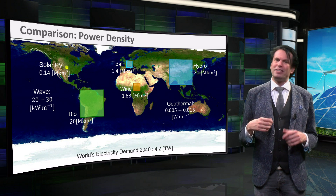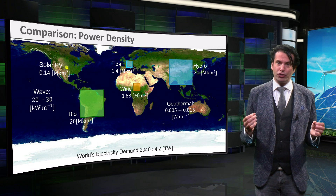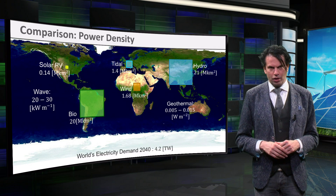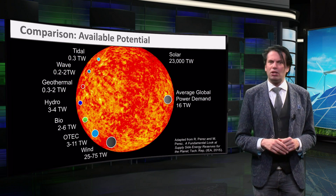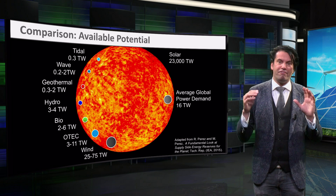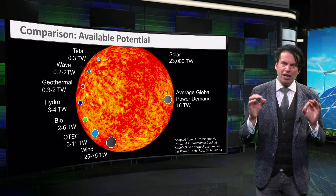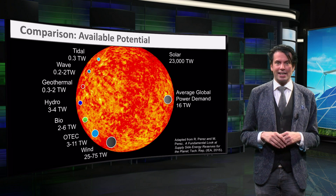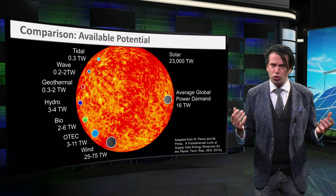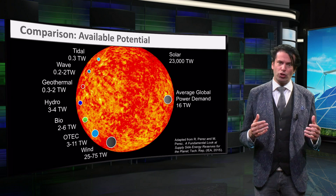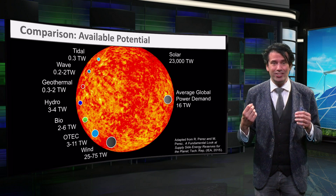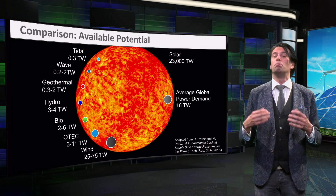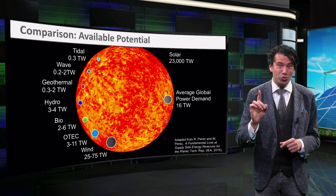We can gather from this map that photovoltaic energy conversion has the largest power output density. Furthermore, since most renewable energy sources are a derivative of solar energy, their available energy potential is fundamentally less, as indicated by this figure. We can also see that the available power potential of some technologies like tidal, geothermal, or hydropower is insufficient to meet the electricity demand in 2015.